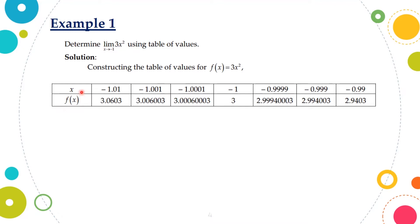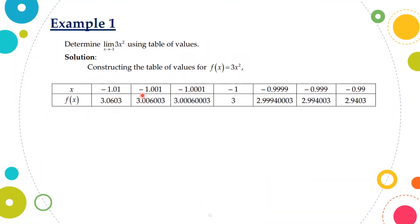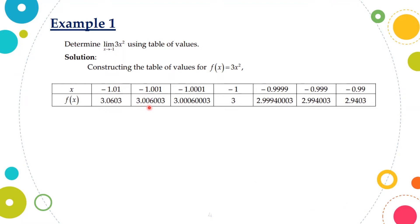For example, if x is equal to negative 1.01, substituting this into our function 3x squared, then f(x) will be equal to 3.0603. If x is equal to negative 1.001, then f(x) will be equal to 3.006003. If x is equal to negative 1.0001, then f(x) is equal to 3.0006003, and so on. Notice that the values negative 1.01, negative 1.001, and negative 1.0001 are numbers from the left of negative 1.